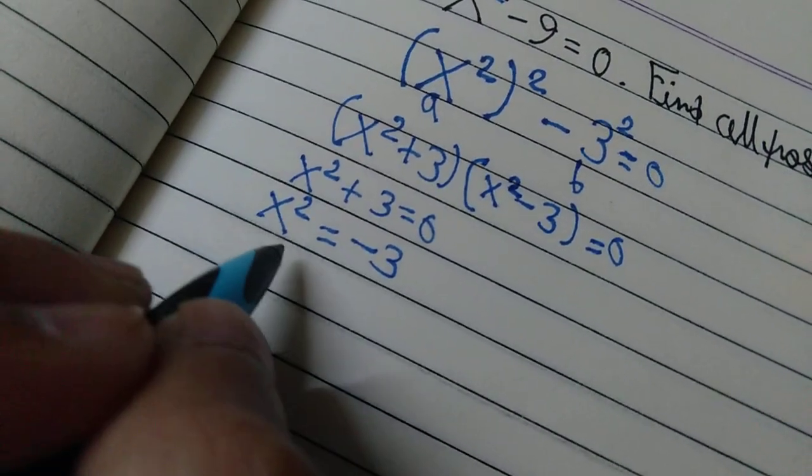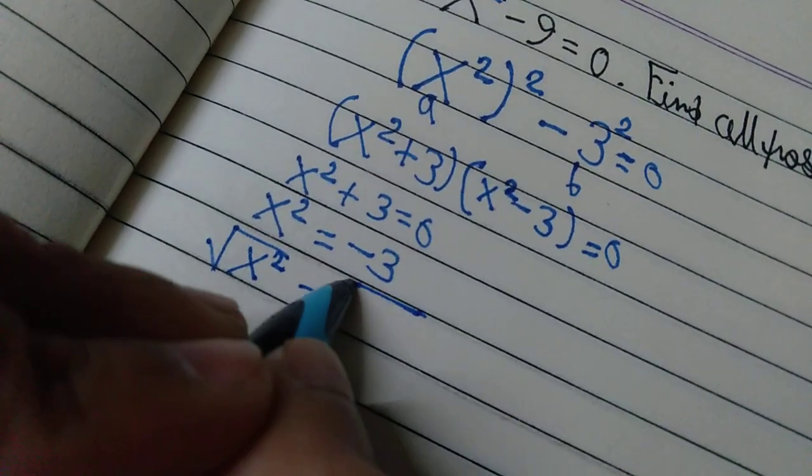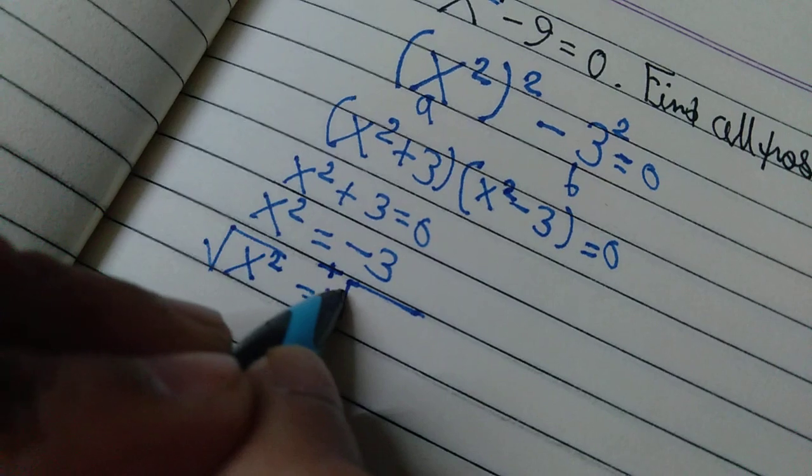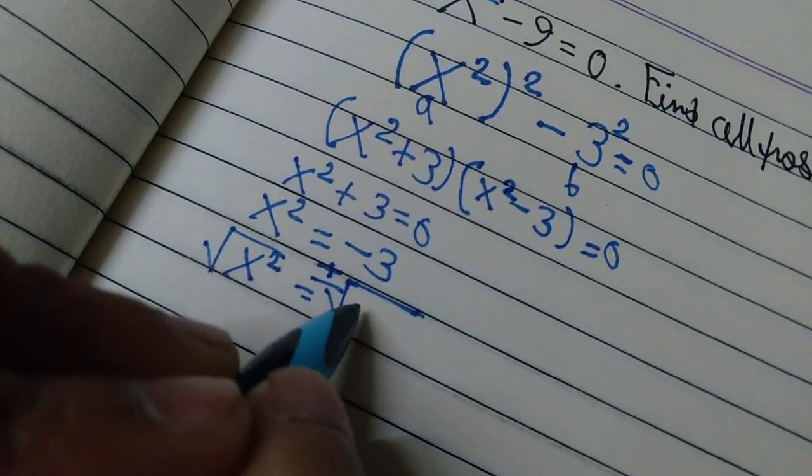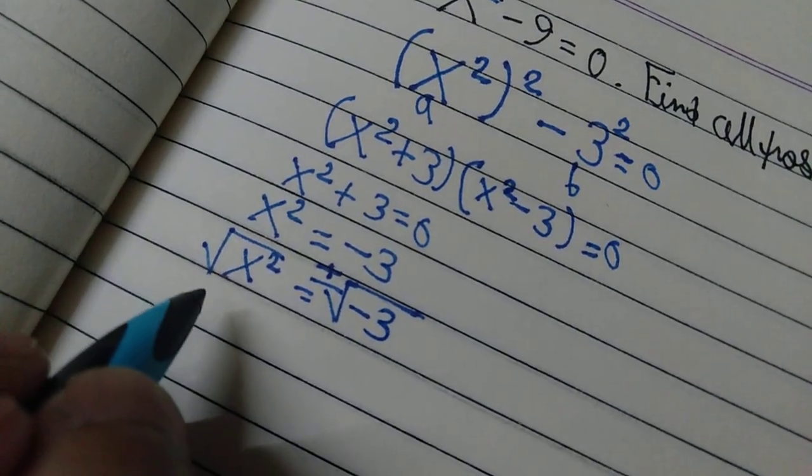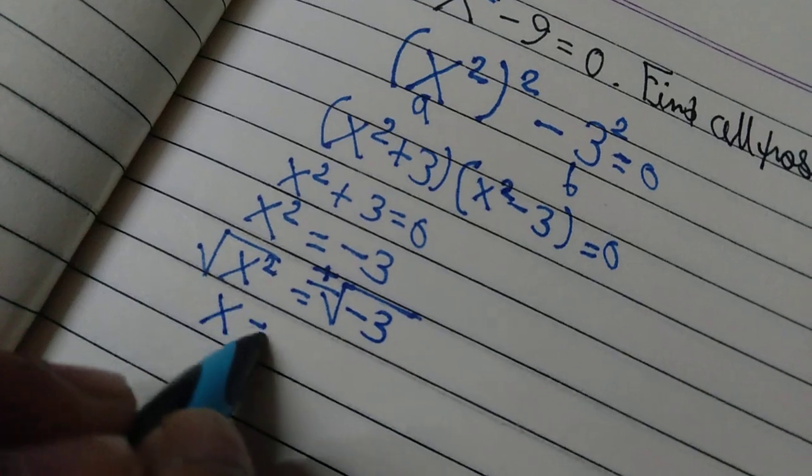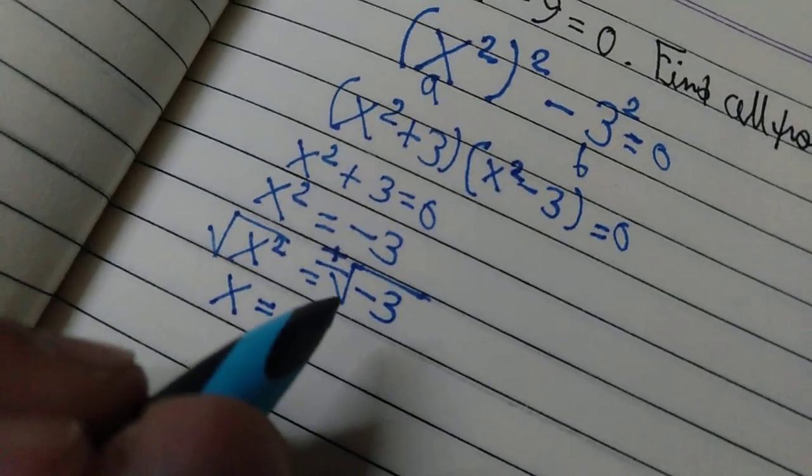case we will take the square root of both sides. So square root of x squared and square root of negative 3. Don't forget the plus minus sign. Square root of x squared is just x, and what's the root of negative 3? Well, under root negative 3